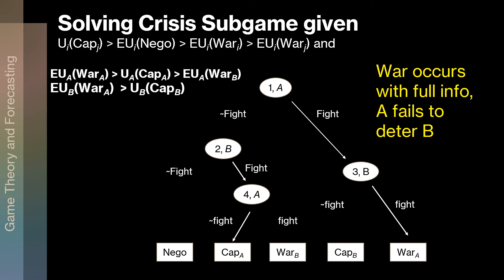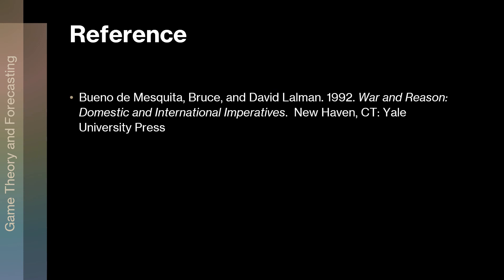When you get deep into these models, there's a lot of things to tease out. But this is the crisis sub game and gives you an idea of what we've got. The reference for this, where a lot of this is played out, is Bueno de Mesquita and Lalman's 1992 War and Reason — a good book with lots to look at in it.